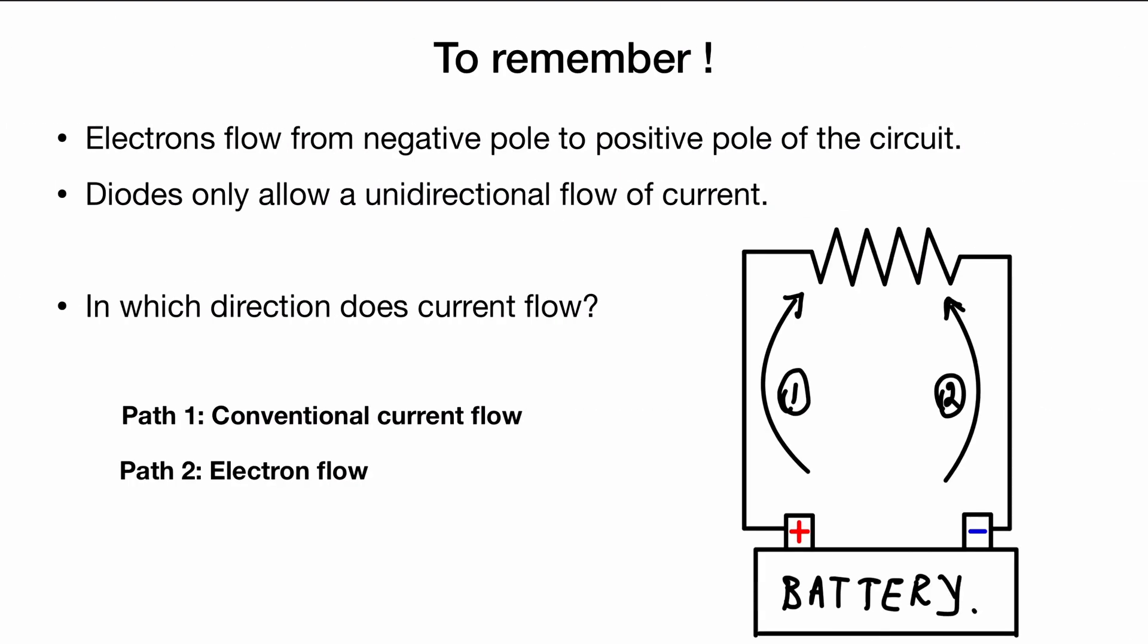Before we get into the exact process of how we rectify, it's worth noting that typically engineers think of the flow of current as going from the positive side of the battery or of the source to the negative side. That is what we call conventional current. But in our case, it is not meaningful to consider this because we are interested in the flow of electrons. Electrons will always flow from the negative side of the terminal to the positive side. That is the path of electron flow. Conventional current flow follows path one, but we are interested in the flow of electrons. So we will consider the flow of electrons from the negative to the positive.